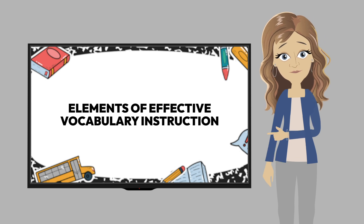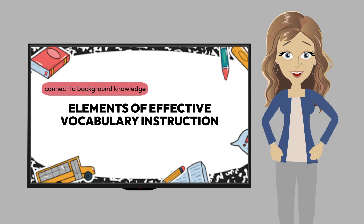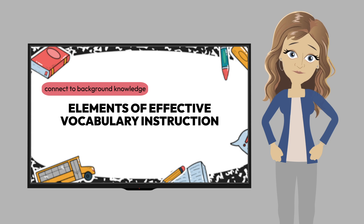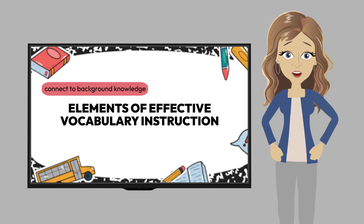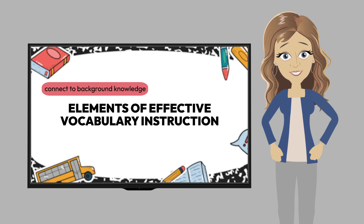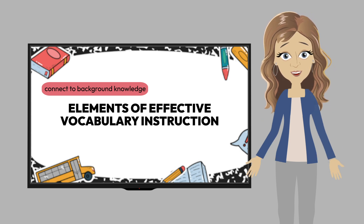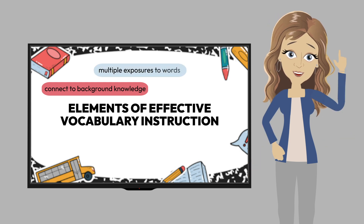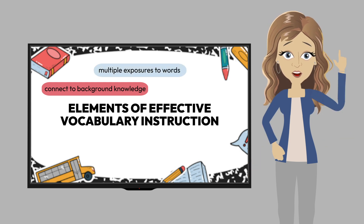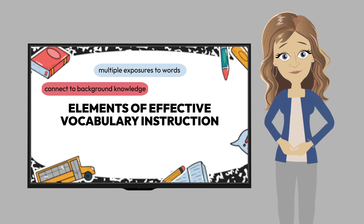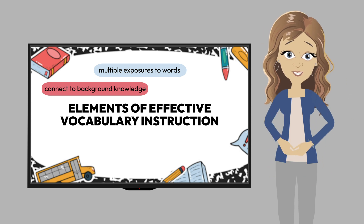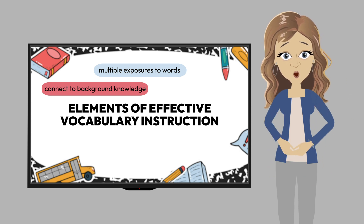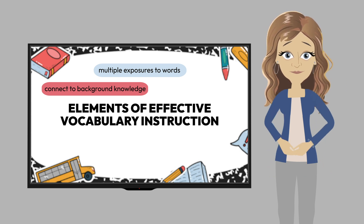The first element is to connect to background knowledge. There is a virtual consensus that background knowledge is essential for reading comprehension, and we must always try to connect a new word to something they know. Effective instruction also provides multiple exposures to words. Children must have many opportunities to encounter the new word, with research showing seven to be a good solid number to work from.